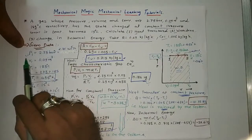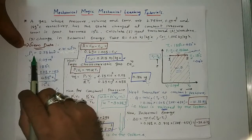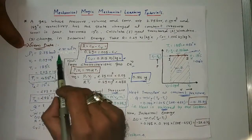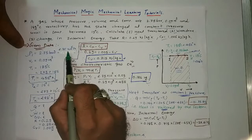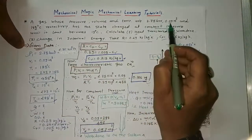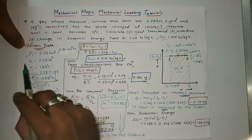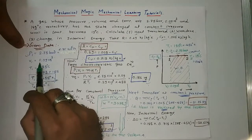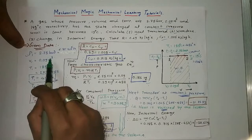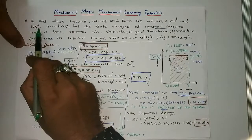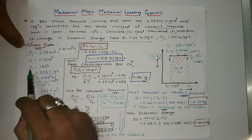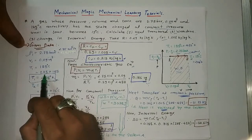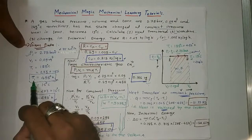Writing down the given data: P1 is equal to 2.75 bar, converting into Pascal that is 2.75 into 10 raised to 5 Pascals. The initial volume V1 is equal to 0.09 meter cube, and the initial temperature T1 is 185 degrees centigrade.